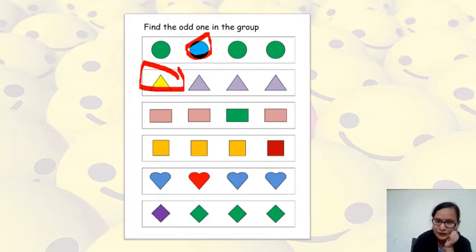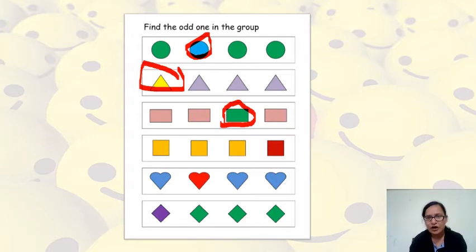Now we will move to our third one. Here you can see there are four rectangles. But the third rectangle is green in color. So you have to pick this one as odd. Now we will move to our second slide. Similarly, you can do others.